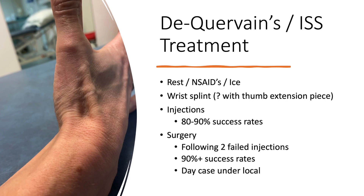Surgery is rarely required for this condition — I might send one or two patients a year after two failed injections and only if symptoms are fairly significant. The operation carries around 90% success rate, but surgeons often don't enjoy doing it because the superficial radial nerve sits directly over the operating site and gets easily irritated, sometimes causing post-operative pain that persists longer than expected. It's a simple day case under local anaesthetic but is a last resort option.